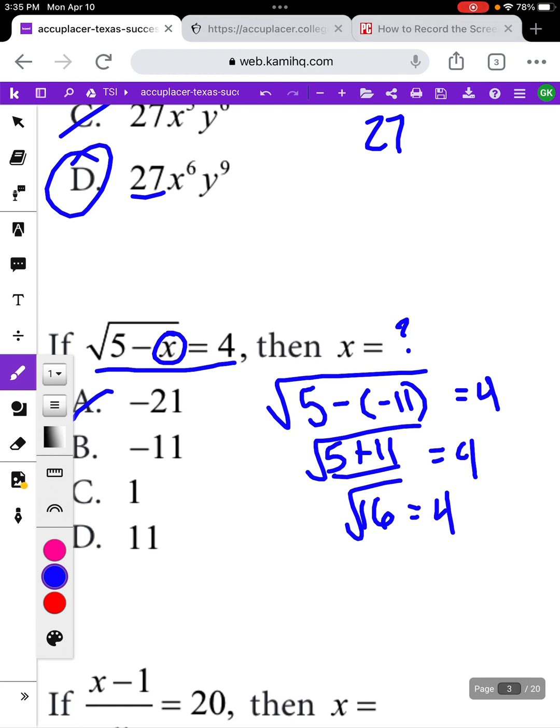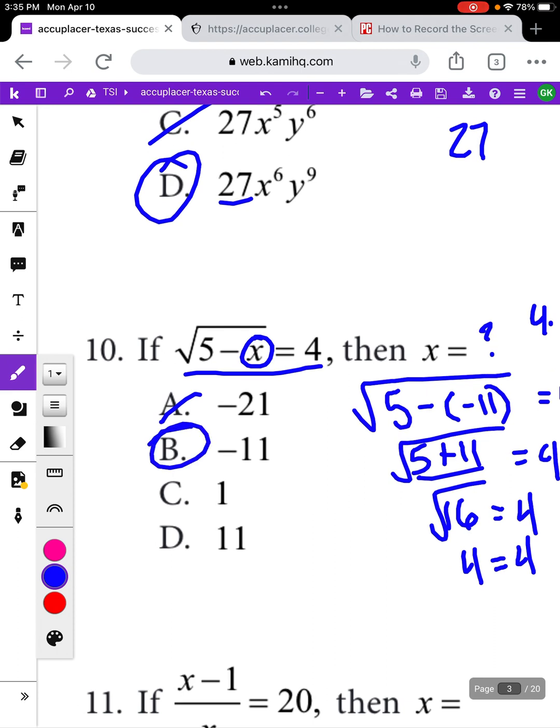Yes, the square root of 16 is 4 because 4 times 4 is 16. So that gave us a true statement, which means our answer has to be B.